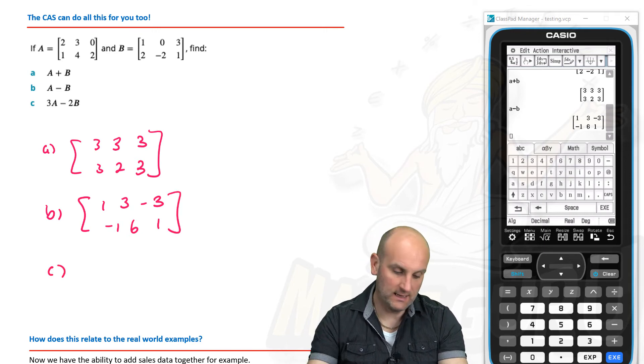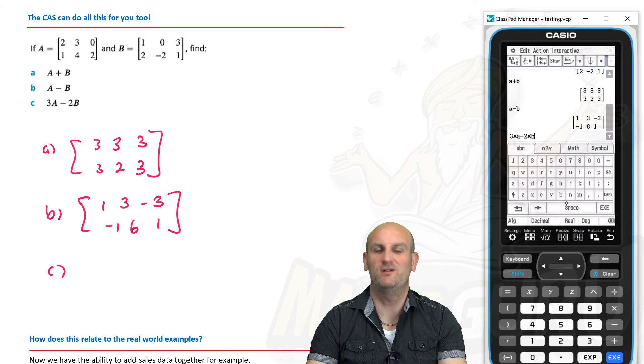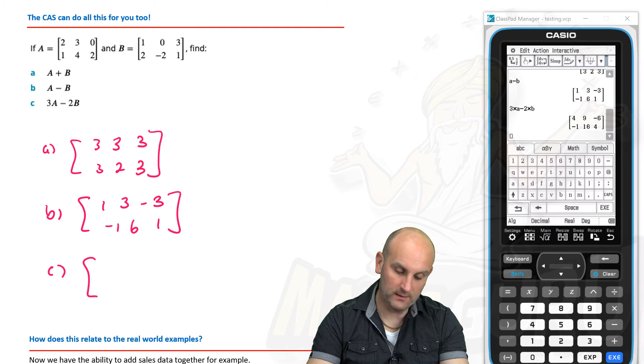And C. Again, we're going to do 3A. So, 3. I'm going to put times A. My advice is to put the times A in or put the time sign in. I'm not sure what would happen if you didn't. But I know that sometimes calculators get a bit funny because they don't realise there's a time sign between it. So, there's enter. And what do I get? 4, 9, minus 6, minus 1, 16 and 4.